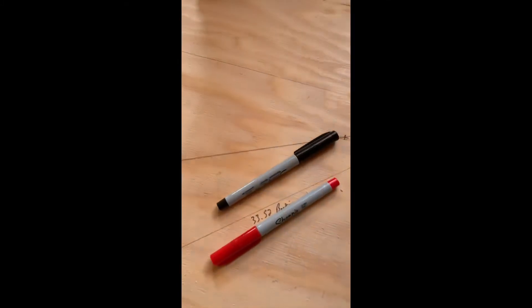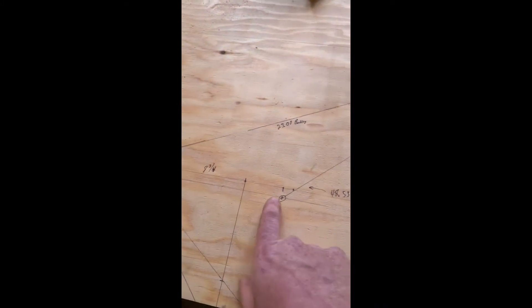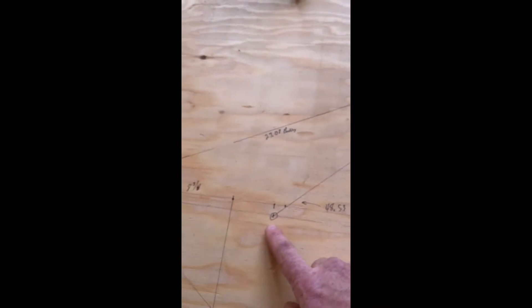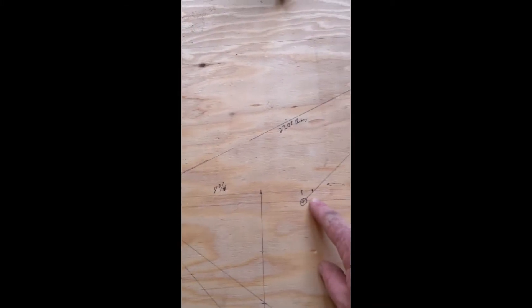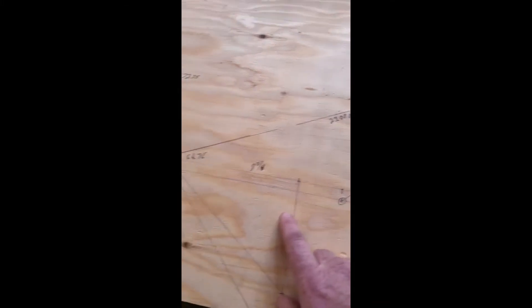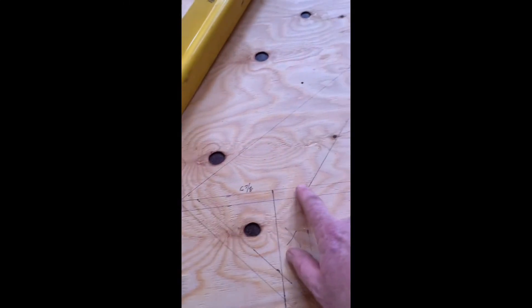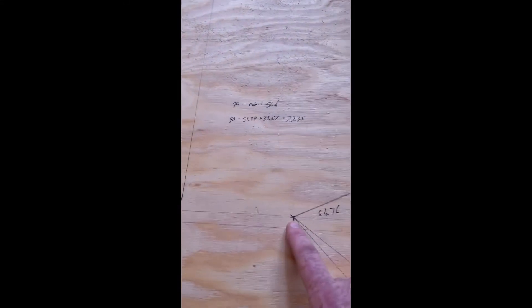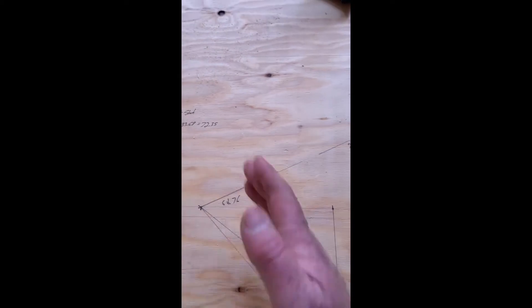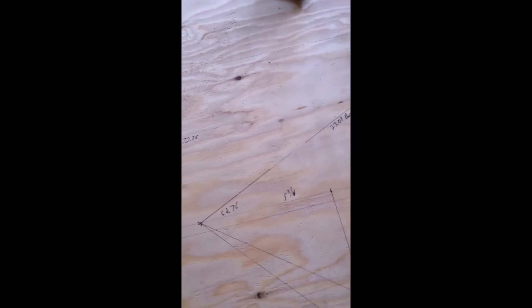And the 15 pitch hip starts from the same relative height, but a longer run because it's a hip. This is a 6 and 7 eighths inch difference, and that's 9 and 3 quarters. It's the same number, but at a 45.